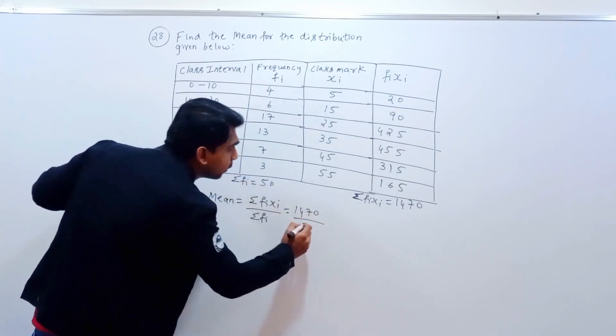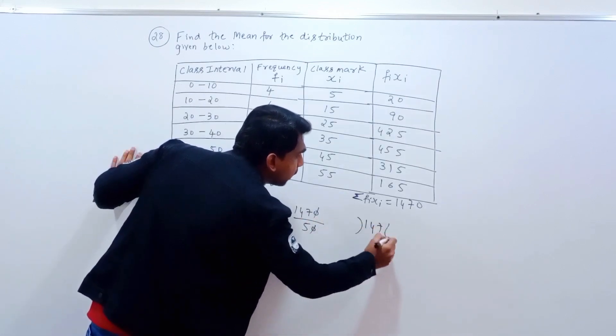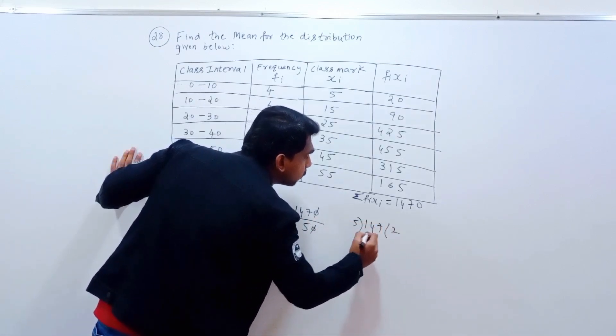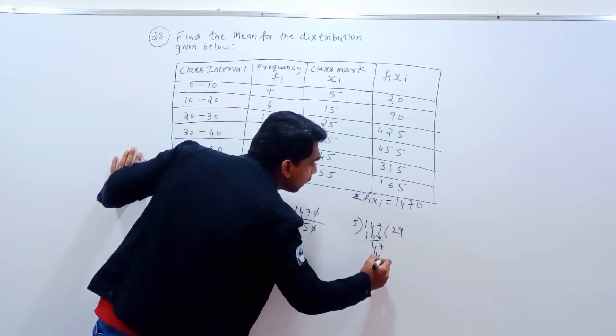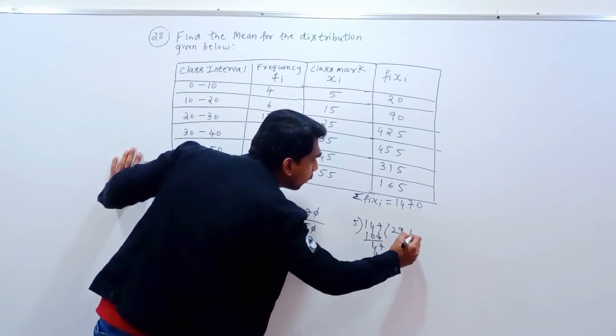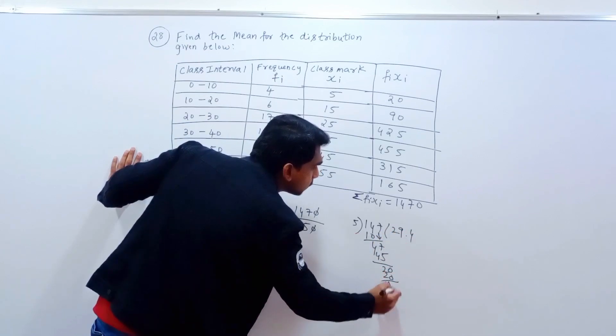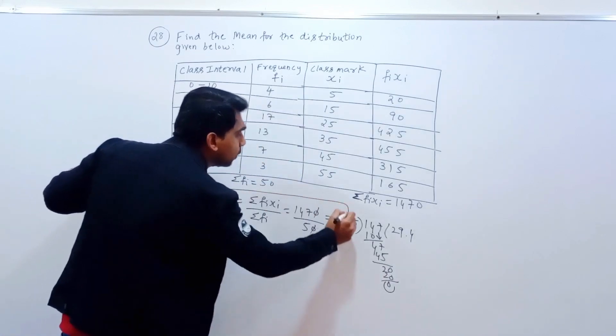Cancel the zeros. Now 147 divided by 5. 5 times 2 is 10, remainder 14. 5 times 9 is 45, 14 minus 45. The answer is 29.4. This is the mean.